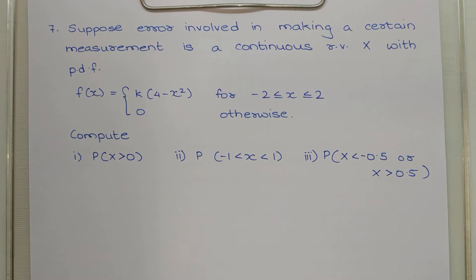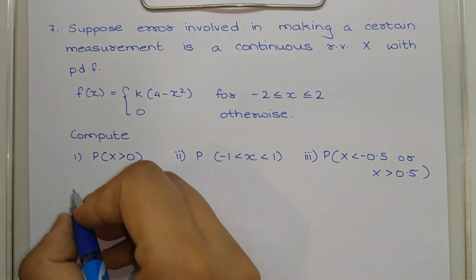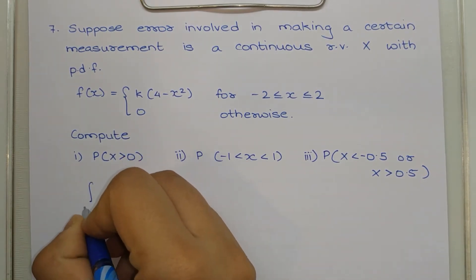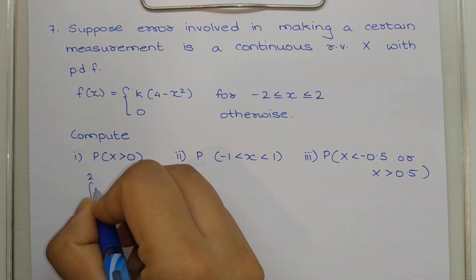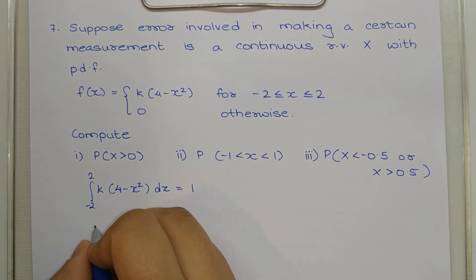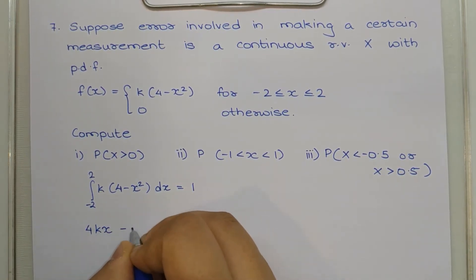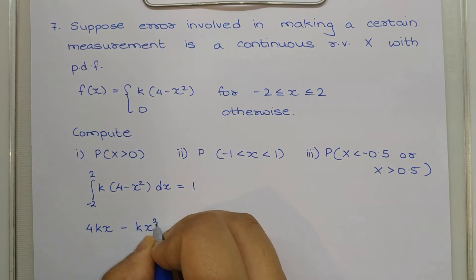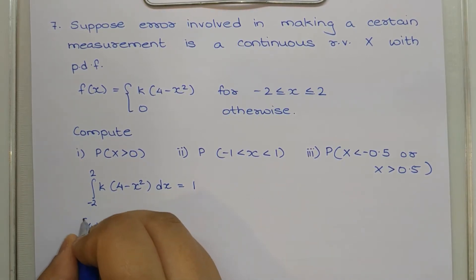In question 7, the measurement error x has PDF f(x) = k(4 - x²) for x between -2 and 2, and 0 otherwise. Before finding probabilities, we must find k by setting the integral of f(x) from -2 to 2 equal to 1.